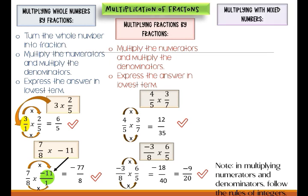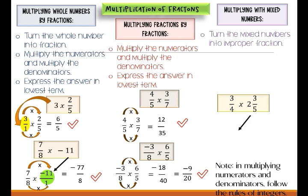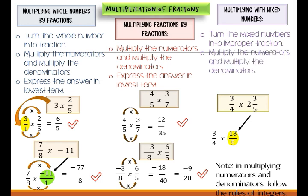Next is multiplying with mixed numbers. We will multiply 3 over 4 by 2 and 3 fifths. The mixed number is 2 and 3 fifths, and we will make this an improper fraction. So 2 and 3 fifths will become 13 over 5 — that is 5 times 2 plus 3 is 13, over 5. Then multiply the numerators and denominators: 3 times 13 is 39, and 4 times 5 is 20. The answer is 39 over 20.